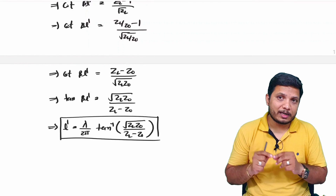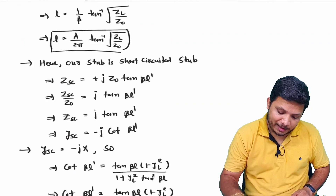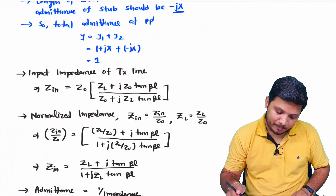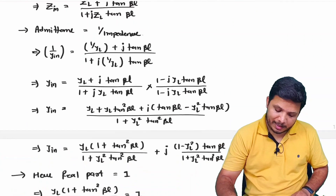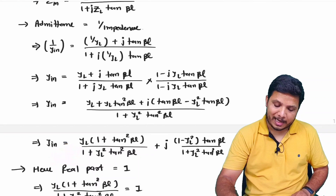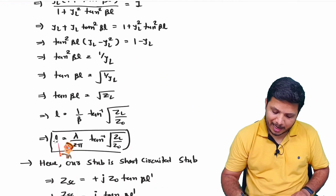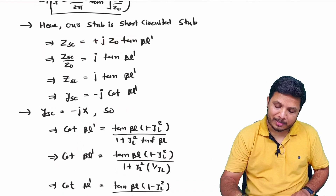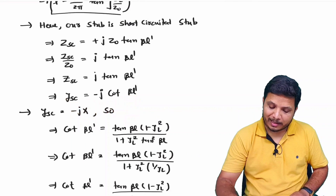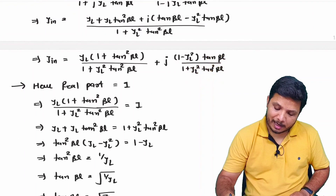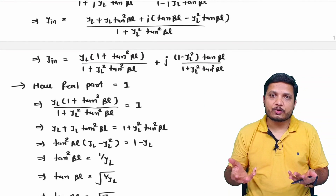Only basic things you need to remember: Z_in calculation, separating real and imaginary in terms of Y_in. Y_in = 1 + jx, so the real part equals 1, giving L, and the short-circuit stub condition gives minus jx, which gives L'. This is how the basic calculations are done. I hope you have understood this. Thank you so much for watching this video.